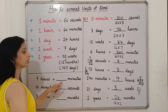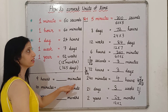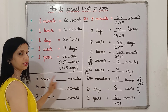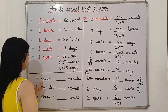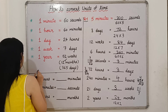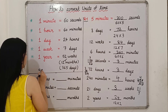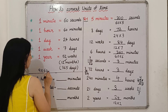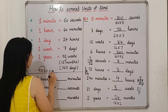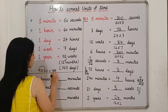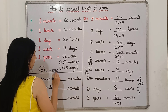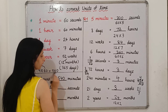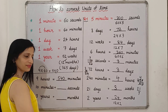9 hours is equal to how many minutes? In 1 hour there are 60 minutes, so in 9 hours it will be 9 multiplied by 60. 9 times 6 is 54, and with the zero it gives us 540 minutes.